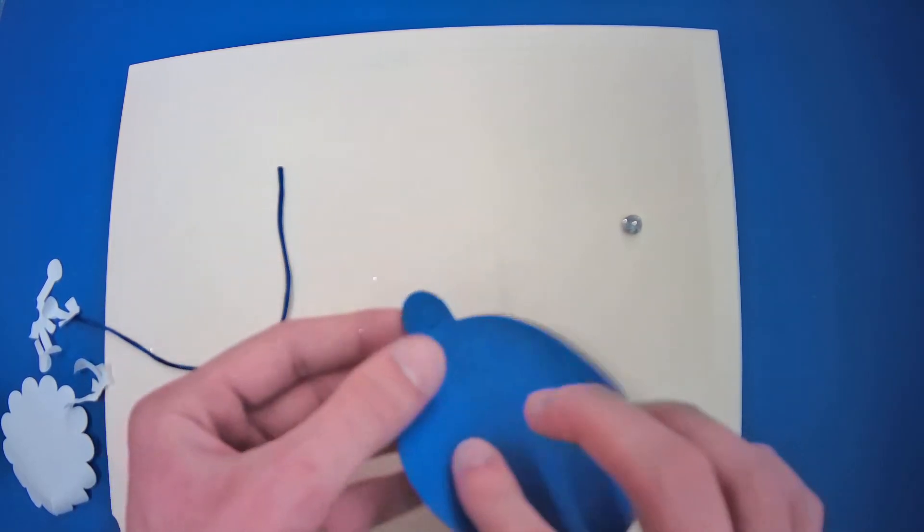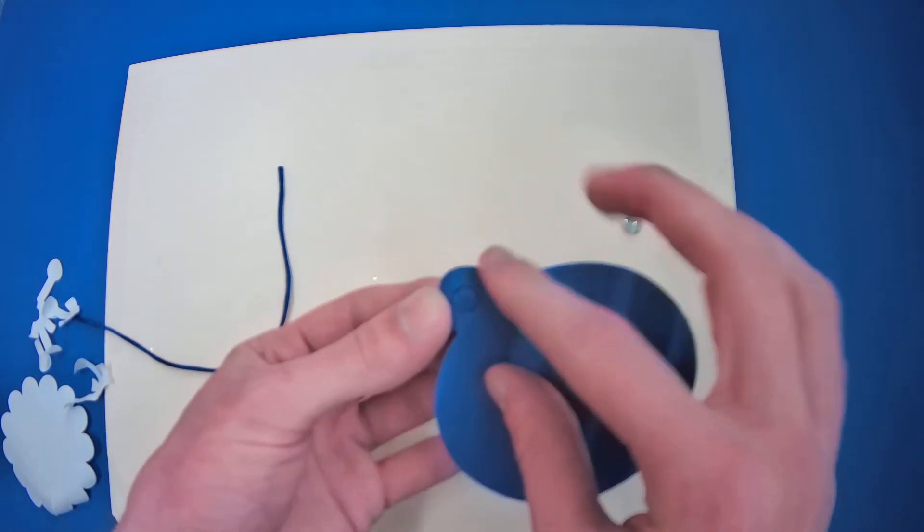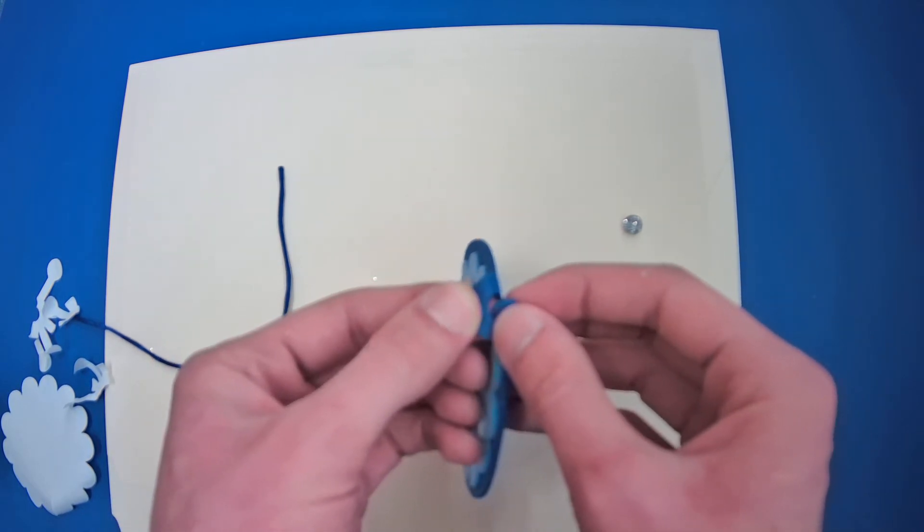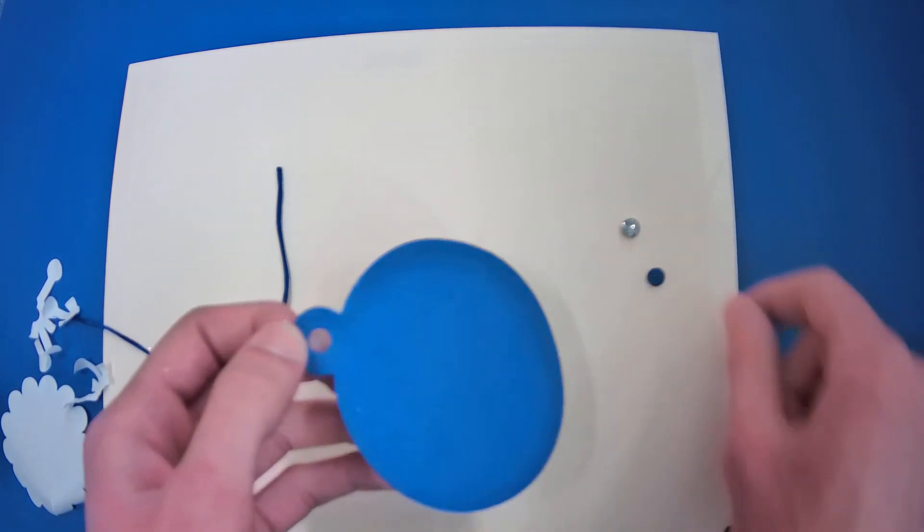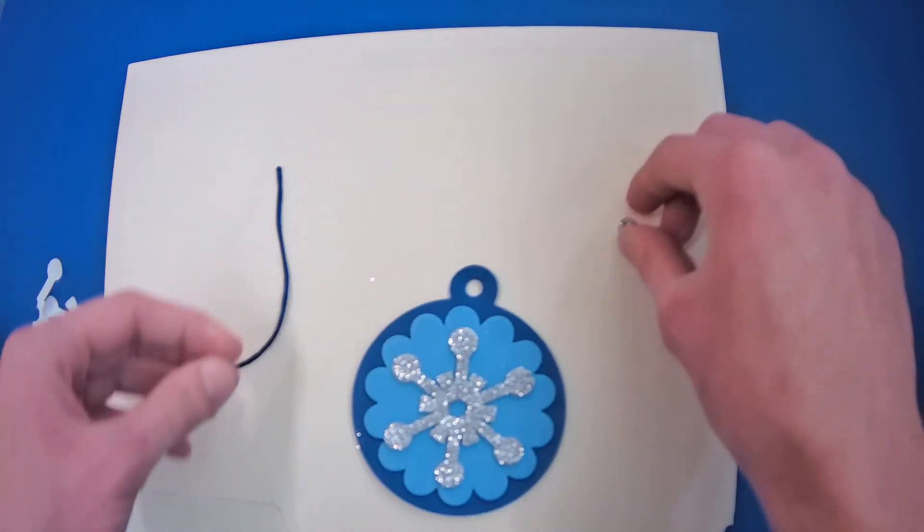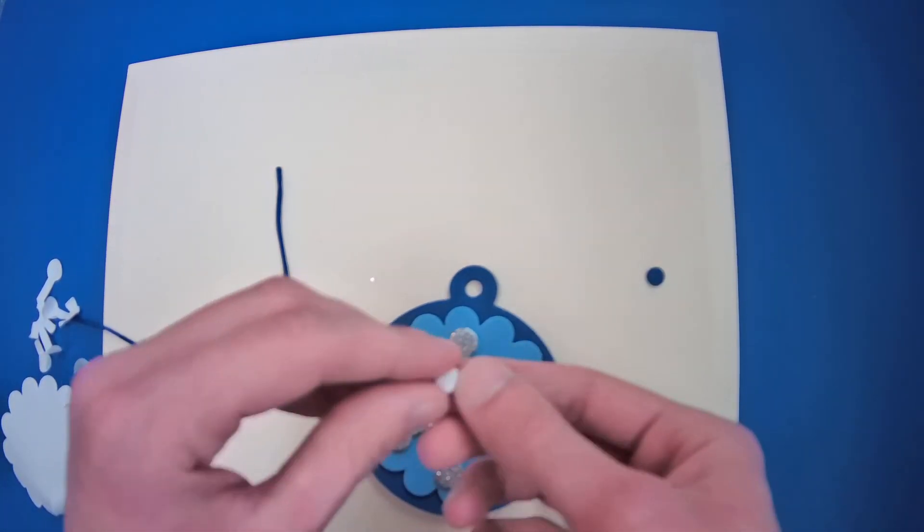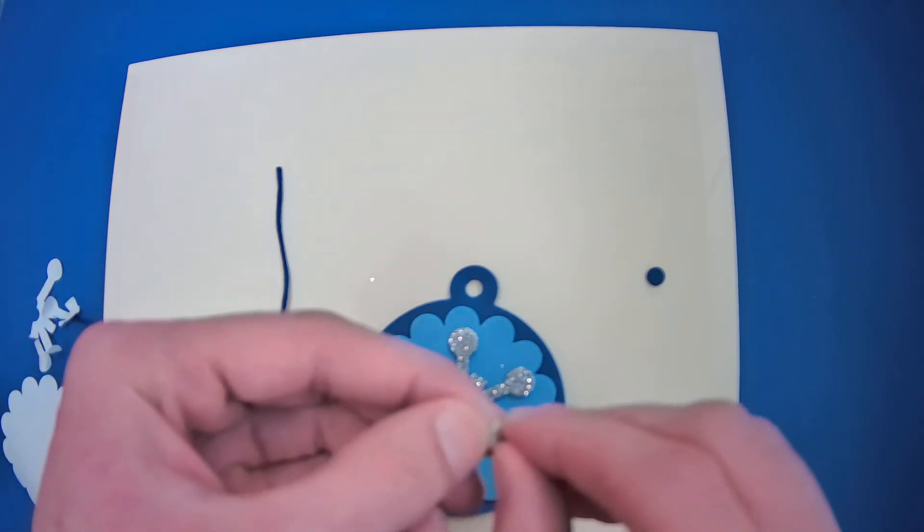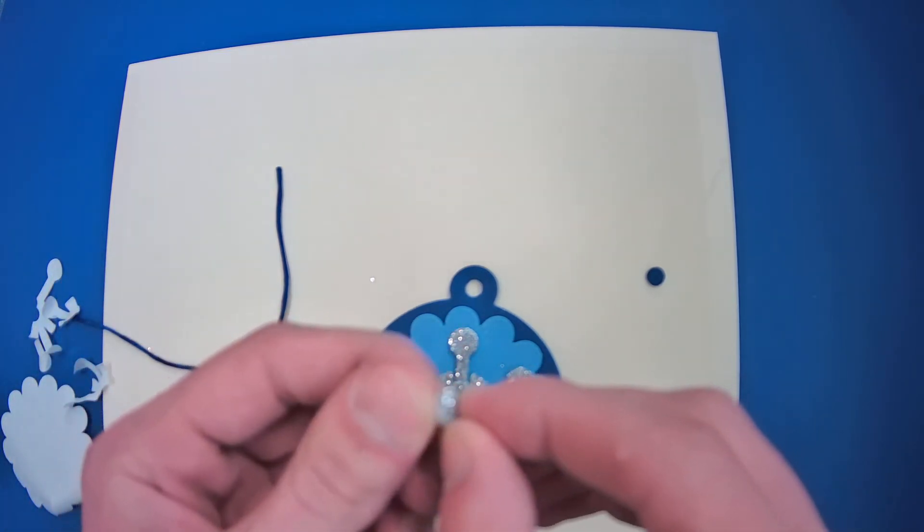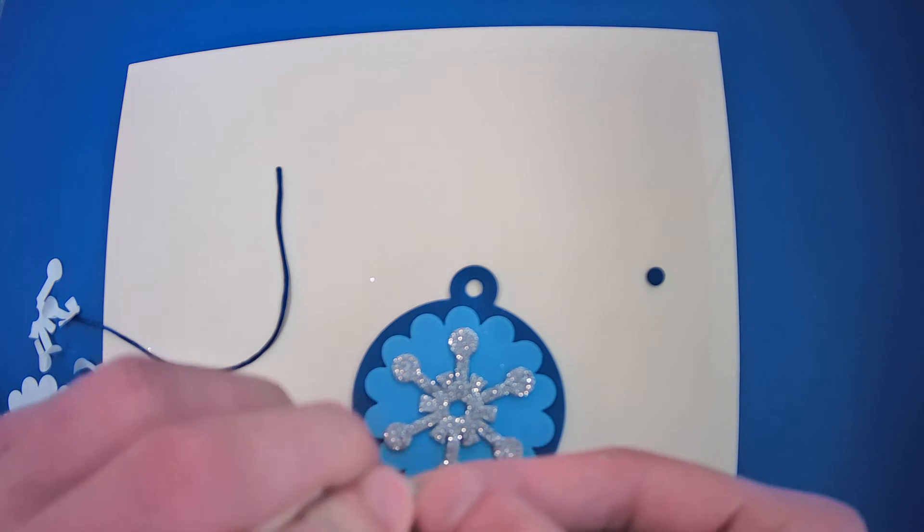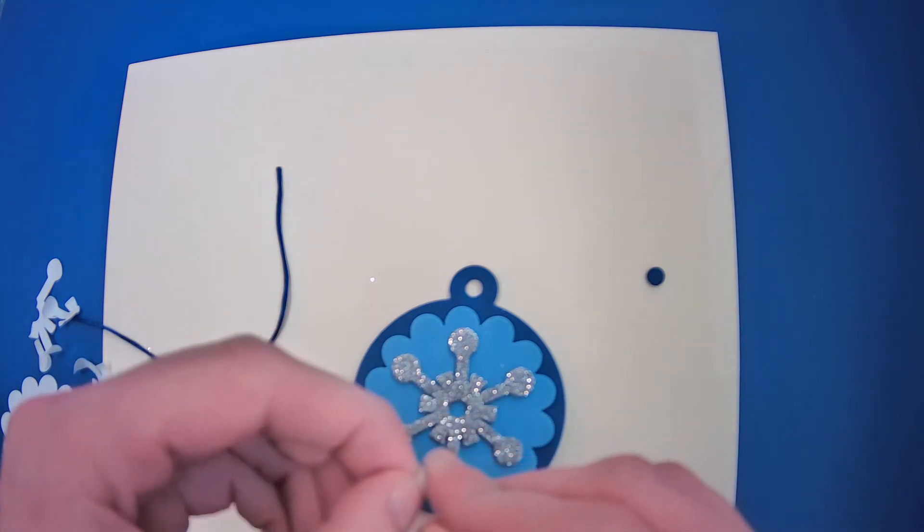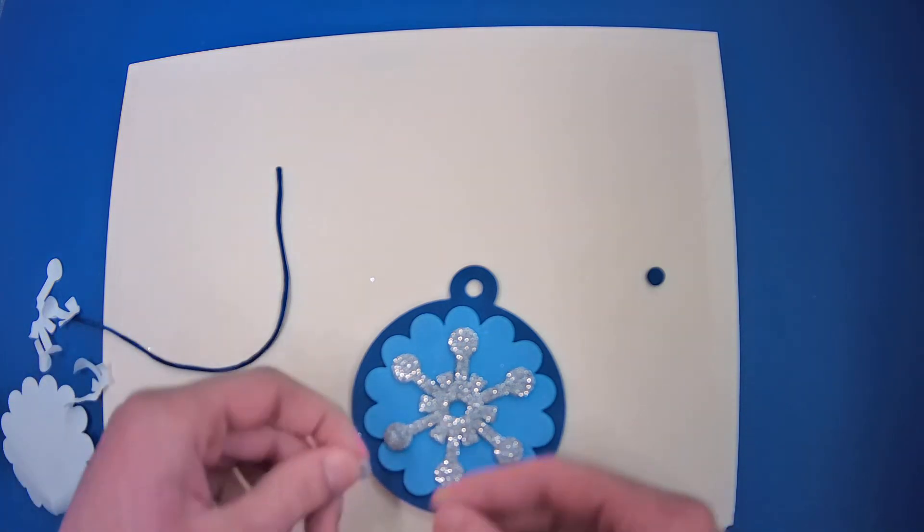Now you're going to want to poke out this thing on the blue ornament base here. So just push into it with your finger and bend it a little bit and pull it right out. And then if you want, you can take the wax paper off the back of this little thing that you poked out from the middle of our silver snowflake in the center.